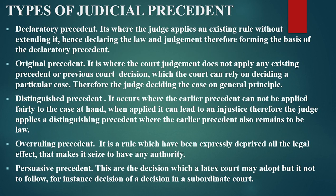Types of judicial precedent. One of them is declaratory precedent. It is where the judge applies an existing rule without extending it, hence declaring the rule in judgment, therefore forming the basis of the declaratory precedent. It is where the judge adopts a certain case rule to determine a certain case.